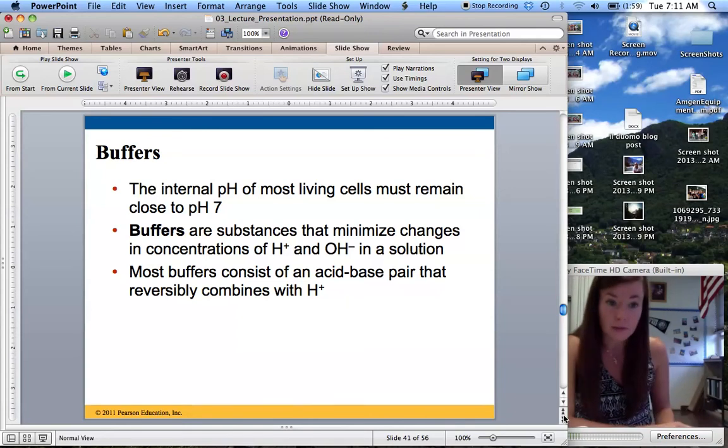Now, if we did the same thing to your blood, which has a pH of 7.4, so you add a .01 mole of a strong acid to your blood, it would only drop to 7.3. And that is because there's a lot of buffers inside your blood to maintain a stable pH.